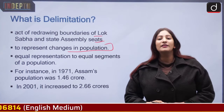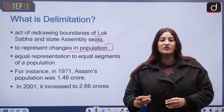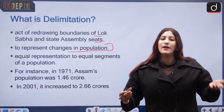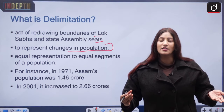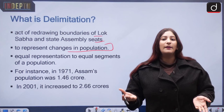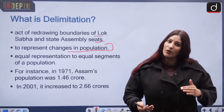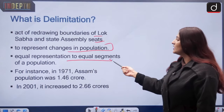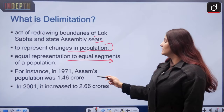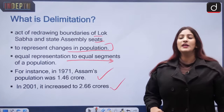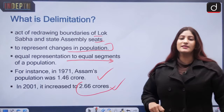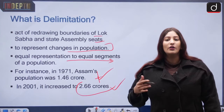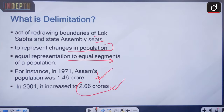Earlier, a region may have had a certain population, and a corresponding number of candidates were elected to represent it. But as the population increases, more representatives are needed. So delimitation is done to adjust this gap and give equal representation to equal segments of the population. For example, in 1971 Assam's population was 1.46 crore, and by 2001 it had increased to 2.66 crore. Delimitation ensures people do not remain underrepresented.